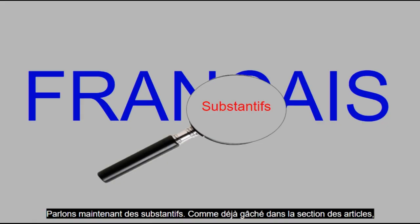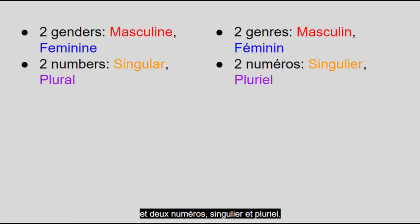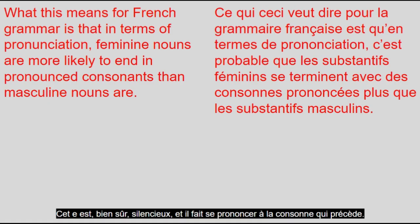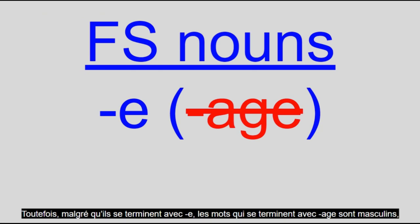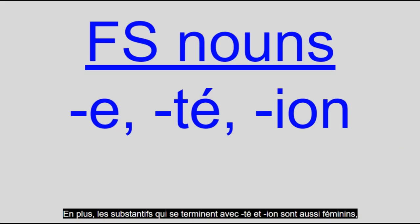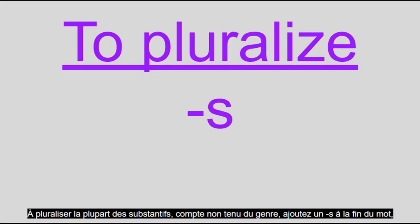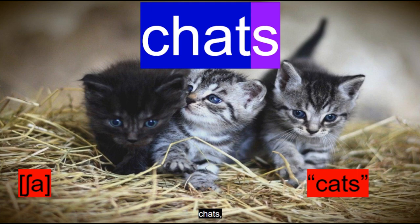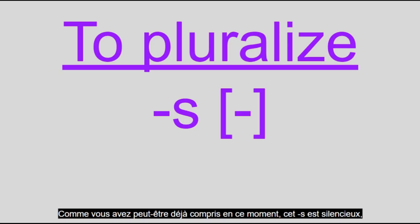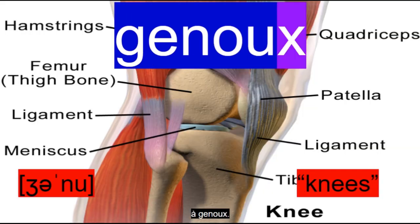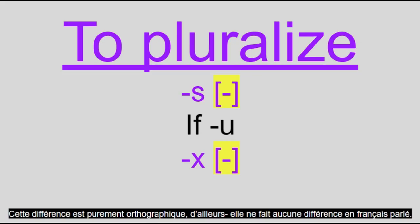Let's talk about nouns now. French nouns are split into two genders, masculine and feminine, and two numbers, singular and plural. The general rule is that feminine nouns end with E, like in bille and grenouille. This E is, of course, silent, and makes the consonant before it pronounced. However, despite ending with E, words ending with -age are masculine, such as visage. In addition, nouns ending in -té and -ion are also feminine, like habileté and attention. Most masculine nouns otherwise don't have a special ending, such as requin and ciel. Pluralized, most nouns regardless of gender add an S to the end of the word, like chats and chouettes. That S is silent, but will reappear pronounced as /z/ in liaison. The exceptional pattern is nouns ending with EAU or OU, which instead take X as their plural suffix, like moineau to moineaux and genou to genoux. This difference is purely orthographic — it makes no difference whatsoever in spoken French. French has no noun cases whatsoever.